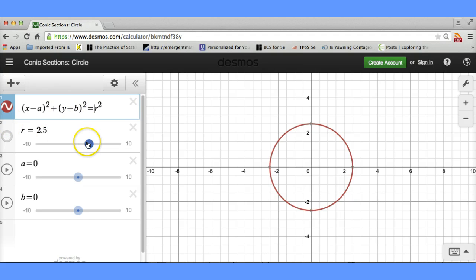Hmm, interesting. I'm not quite sure why this is going down to negative 10. Because we know radius has to be positive. So I'm going to change this to go from 0 to, let's say, 10. And we'll have it go up by increments of 1.